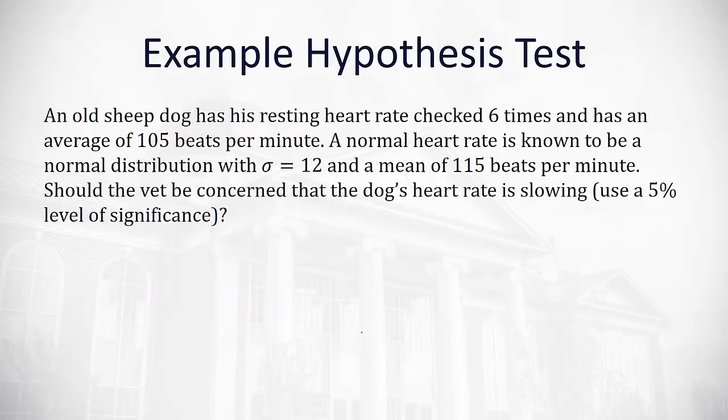Now this example might be a little silly, but it kind of sets up the steps of it. But let's try a real hypothesis test. Let's say an old sheepdog has his resting heart rate checked six times. That's our sample size, so I'll mark that as n equals 6. And in those six times, his average heart rate is 105 beats per minute. Notice that average is of the sample, not the population. That's only those six heart rate checks. We're going to call that x-bar because that's a sample.